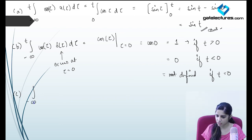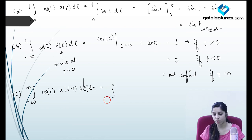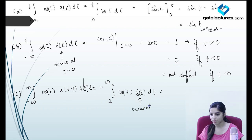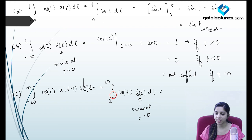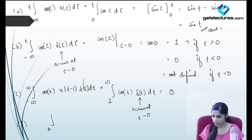Next part: ∫₋∞^∞ cos(t)·u(t−1)·δ(t) dt. The shifted unit step u(t−1) starts at t = 1, so the integrand is nonzero only for t ≥ 1. But δ(t) occurs at t = 0, which is not in the interval [1, ∞). Since the point of occurrence of δ(t) is not included in the limits of integration, this integral equals 0.